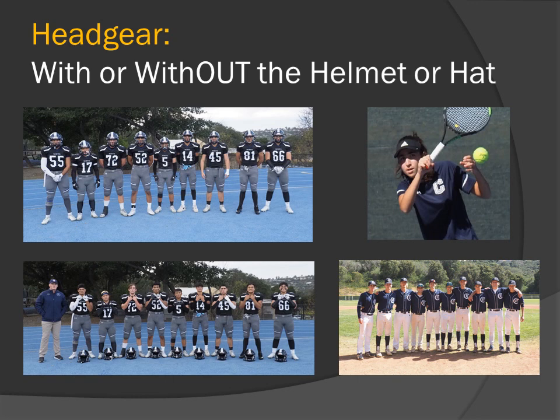The bottom-right picture shows one way to deal with this. Instead of the sun coming from the front, look at the shadow on the ground — the sun is coming from their back, so their whole front, face and body, is in the shadow. The exposure is then set for the shadow, solving the lighting problem.